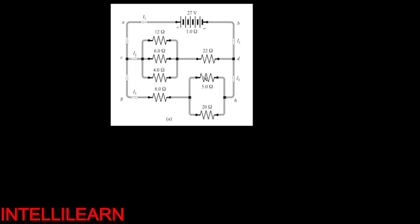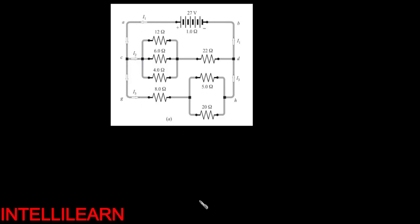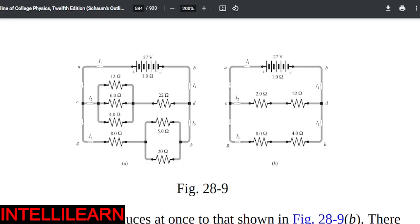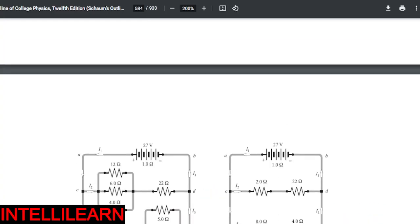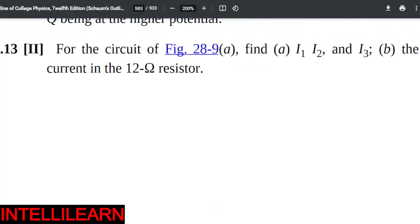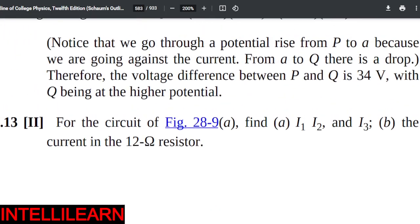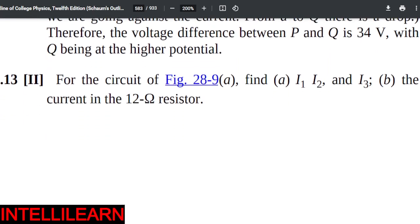In this question we have to find all of these currents. Then find the current in the 12 ohm resistor. Let's check - yes, find the current in the 12 ohm resistor.